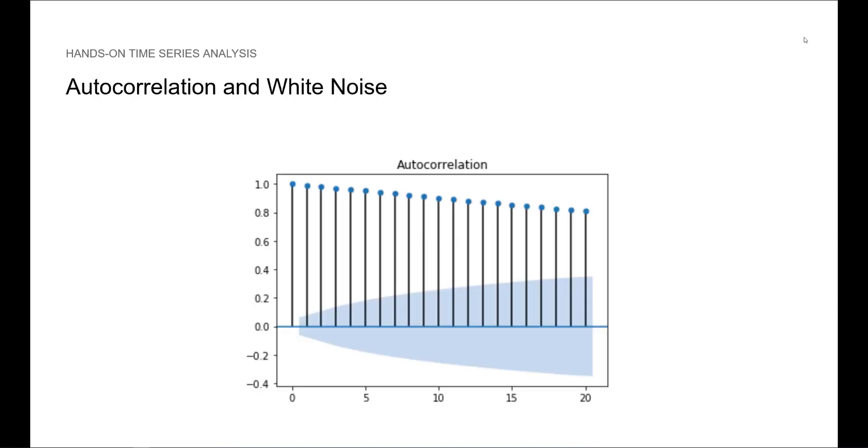Here is an example of an autocorrelation plot or correlogram. As you can see, the lag is on the x-axis and the value of the coefficient is on the y-axis, and the pale blue area that you see is the interval of significance.